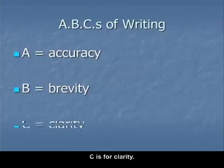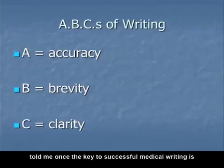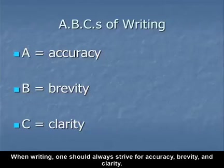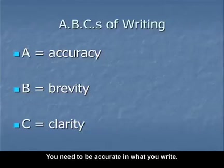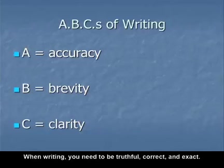What are the ABCs of writing? A is for accuracy, B is for brevity, C is for clarity. A mentor of mine, Dr. Chuck Bacchiano, told me once that the key to successful medical writing is always to remember the ABCs. When writing, one should always strive for accuracy, brevity, and clarity.